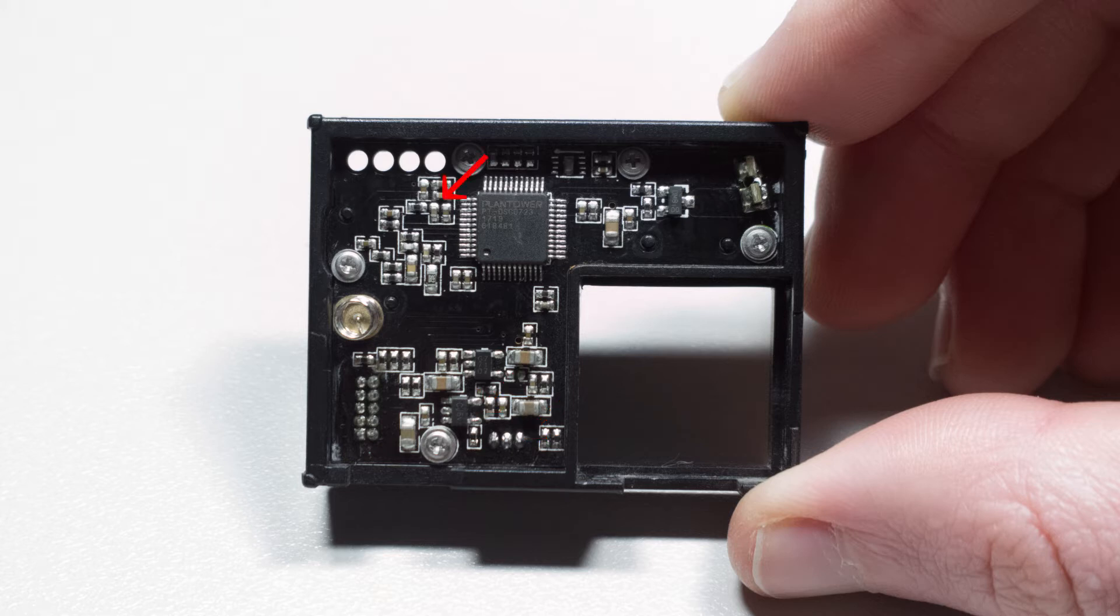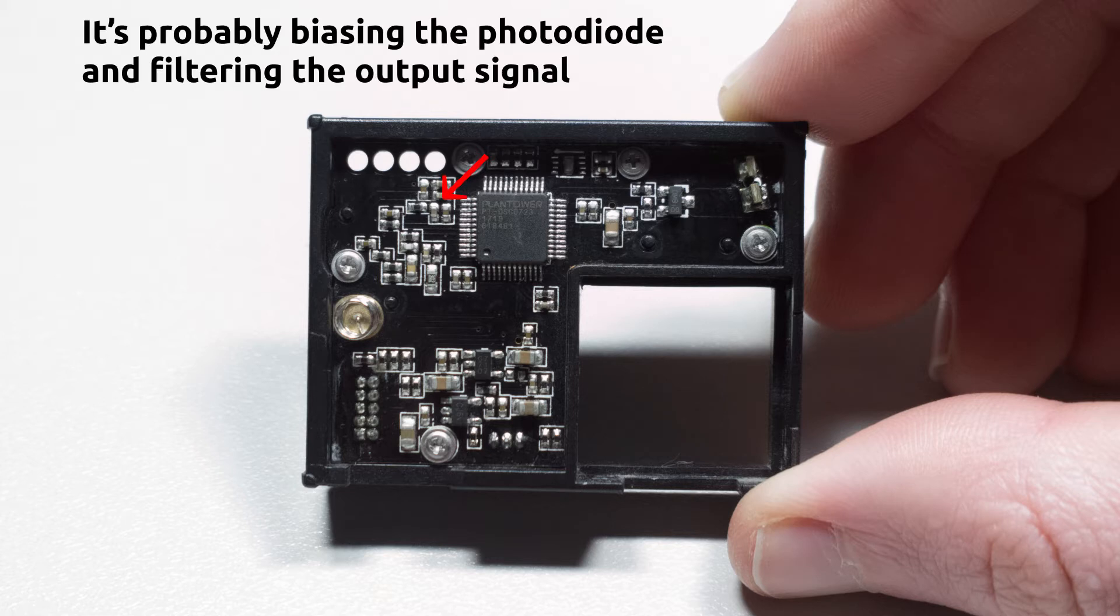Next, we also have here a surprising amount of passives. I'm really not quite sure what they're doing with all these passives, and honestly I couldn't be bothered to reverse engineer this thing, especially with the black PCB. Although that is kind of required to minimize light reflections considering it's under the photodiode.